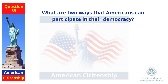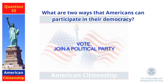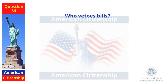What are two ways that Americans can participate in their democracy? Vote. Join a political party. Who vetoes bills? The president.